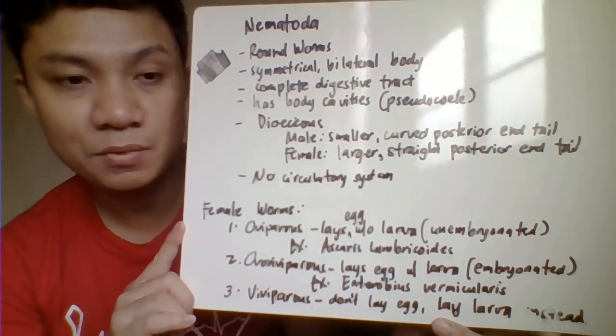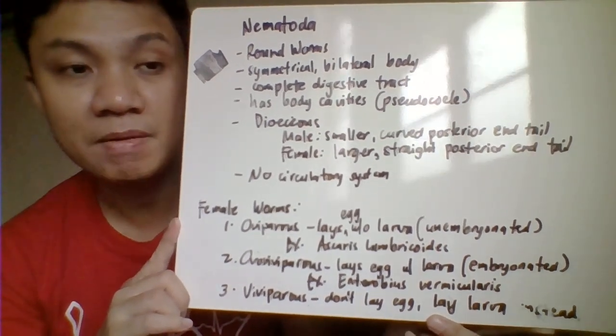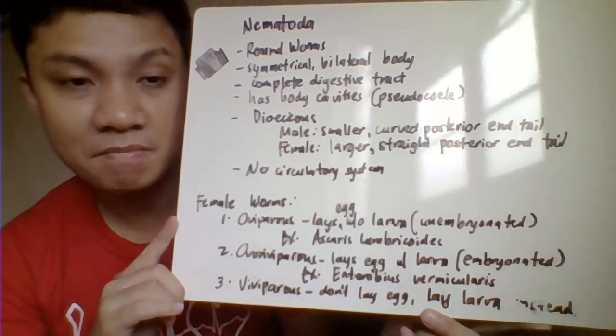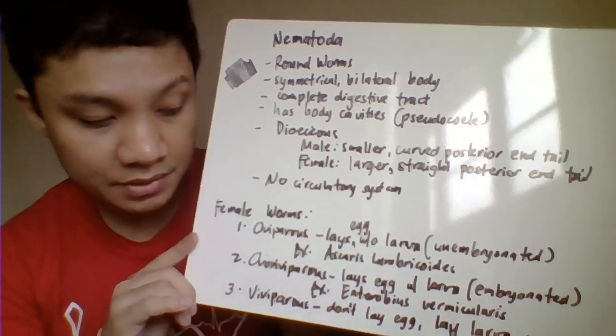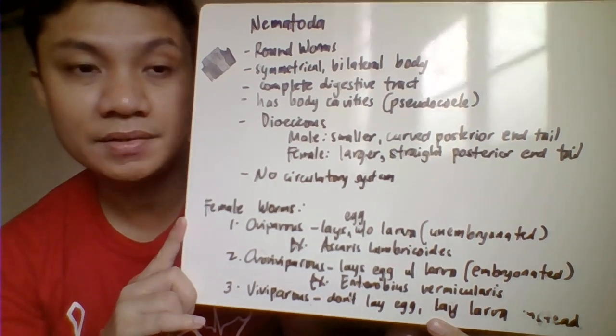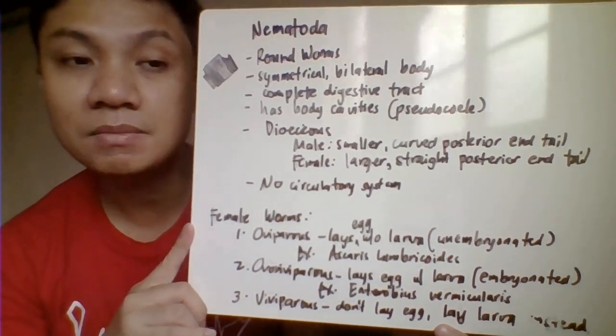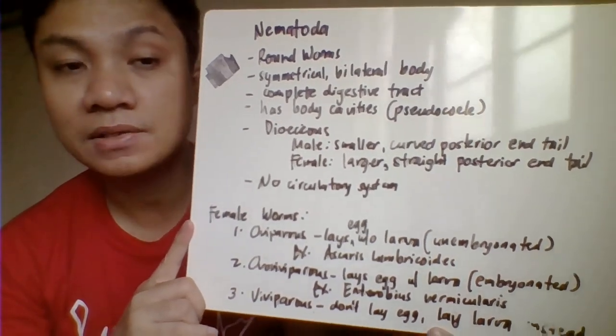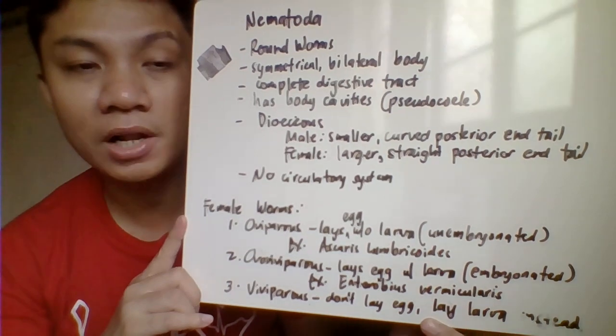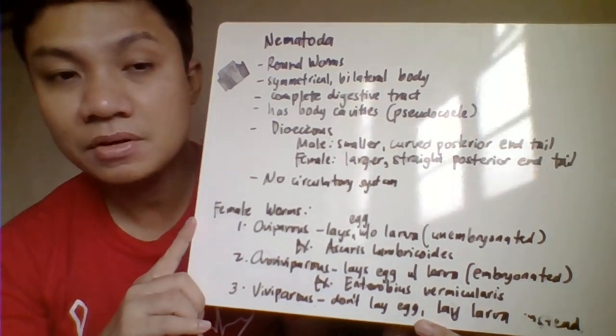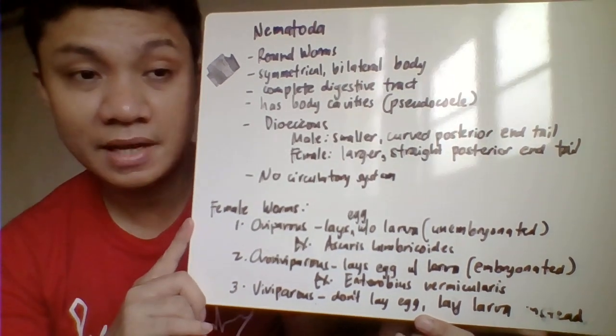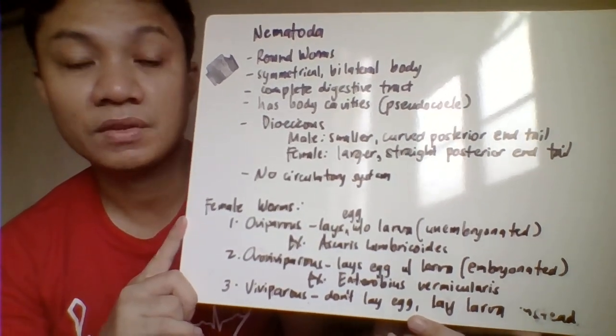Another classification is ovoviviparous. These are parasites where female worms are laying eggs, but their eggs are already embryonated and ready to hatch, like Enterobius vermicularis. We also have viviparous or larviparus, parasites that only lay larvae without eggs. Sometimes you can encounter parasites like Capillaria philippinensis which can lay eggs and larvae at the same time. We also have parthenogenetic parasites, in the case of Strongyloides, which is capable of self-fertilization and doesn't require a male worm.